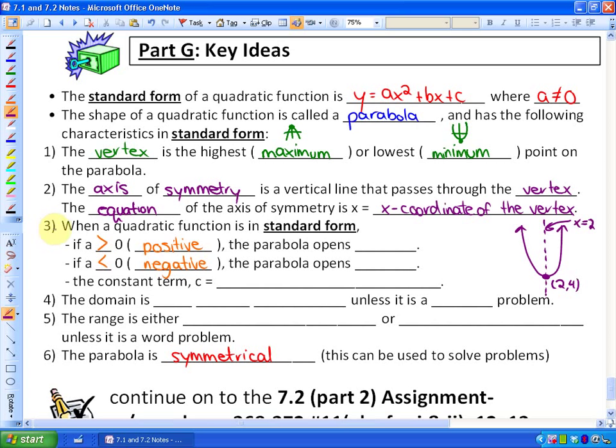Third characteristic, when a quadratic function is in standard form, if a is greater than 0 or positive, so if a is positive, the parabola opens up. So in other words, like this. If a is less than 0 or negative, the parabola opens down, or like this.